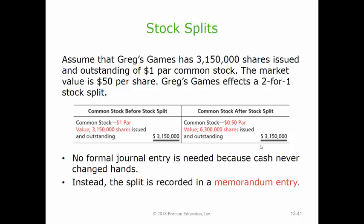After the split, they would have twice as many shares. You take the number of shares issued and outstanding before the split and multiply it by what I call the split number, which is the lead number in the ratio. This is a two-for-one split, so the split number is 2. 3.15 million times 2 gives us 6,300,000 shares that will be issued and outstanding after the split.